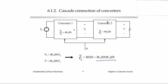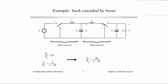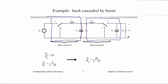A straightforward thing to try is to take a buck converter as converter one and a boost converter as converter two. This combination is capable of making an output voltage either less than or greater than VG, depending on the duty cycles of the individual buck and boost converters. If we drive the switches of both converters with the same duty cycle, what we get for the cascade connection is D over (1 minus D), which is a buck-boost type conversion ratio. Here is the circuit: a buck converter with its switch and LC filter, whose output becomes the input to a boost converter with its switch and L and C driving the load.